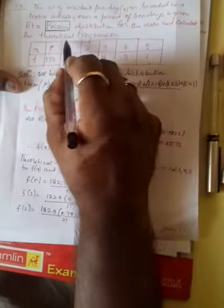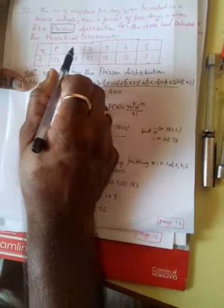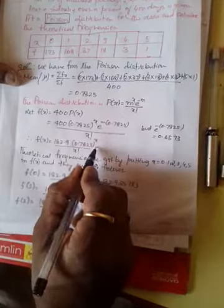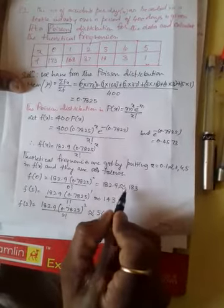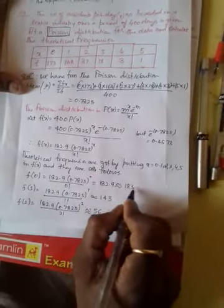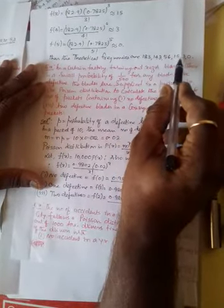Now we calculate the theoretical frequencies for x = 0, 1, 2, 3, 4, 5. Putting x = 0: f(0) = 182.9 × (0.7825)^0 / 0! ≈ 183. Similarly, f(1) = 143, f(2) = 56, f(3) = 15, f(4) = 3, and f(5) = 0. The theoretical frequencies are 183, 143, 56, 15, 3, and 0. The example is over.